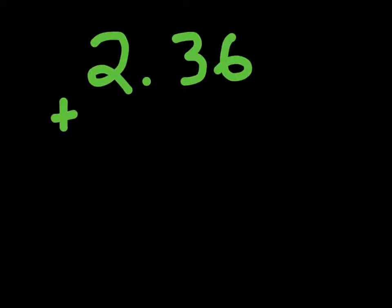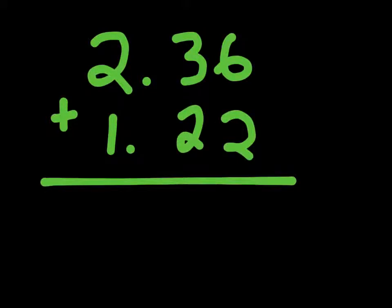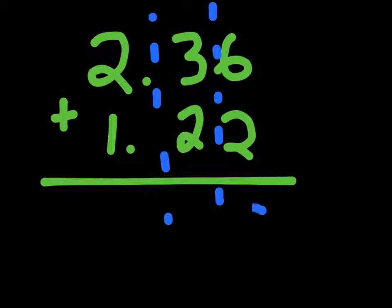Alright, so let's say we're told to add 2.36 plus 1.22, and we're told to add these. Well, we do what we would do for regular addition, break these up into parts, and we know that 6 plus 2 is 8,